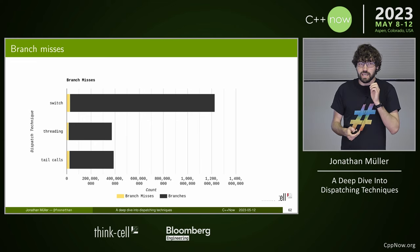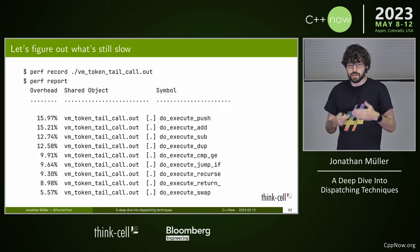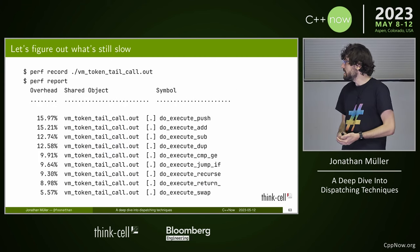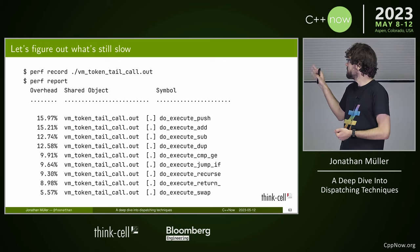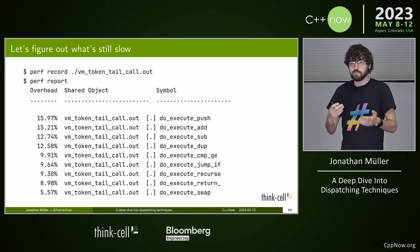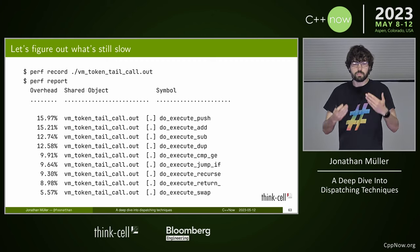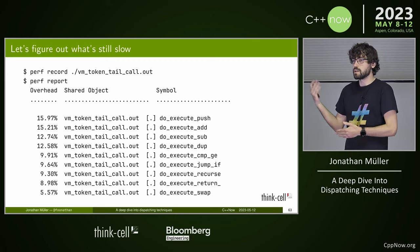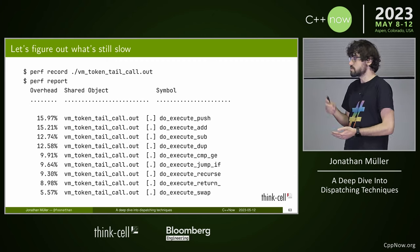Benchmarking tail calls: performance is roughly similar to computed goto — we're even slightly faster for reasons that are unclear since we're essentially doing the same thing. One big advantage: since we now have separate functions, perf record gives us a breakdown of different instruction handlers. We can see that 16% of time is spent in push. So now we know we might want to optimize push — for example, adding a separate instruction just to push 1, optimizing that common case.